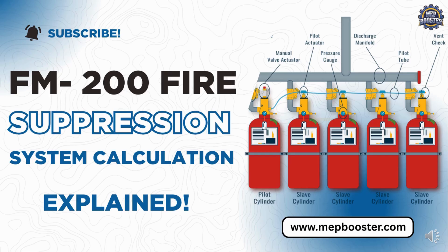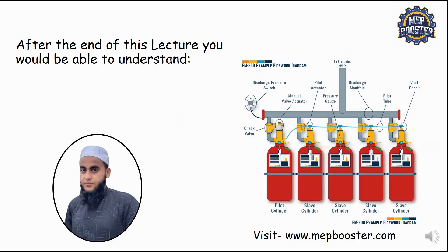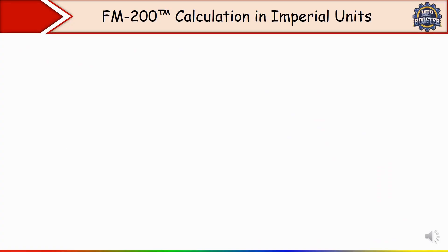Hello everyone, welcome back to the new lecture. In this lecture we'll discuss FM 200 fire suppression system calculation. After the end of this lecture you would be able to understand FM 200 system calculation. We'll discuss FM 200 calculation in imperial units. FM 200 is the brand name for heptafluoropropane. It is a clean agent fire extinguishing gas stored as liquid in a cylinder but released as gas during discharge.